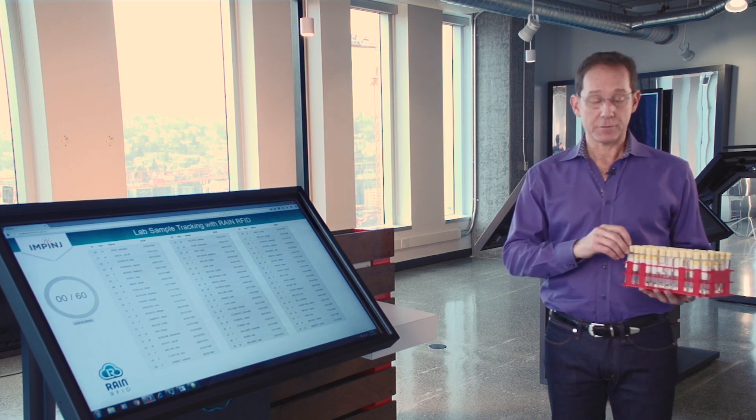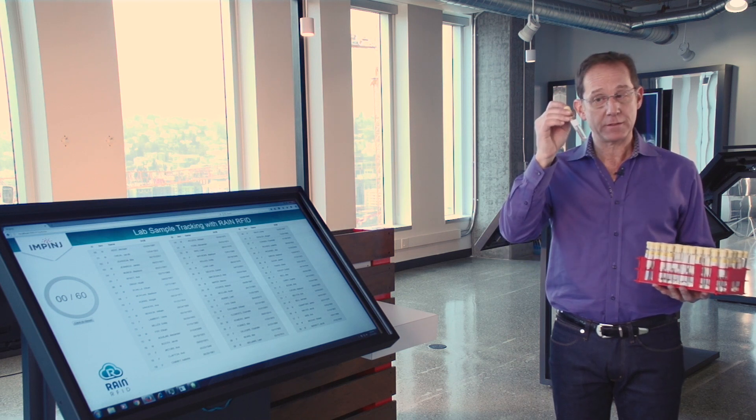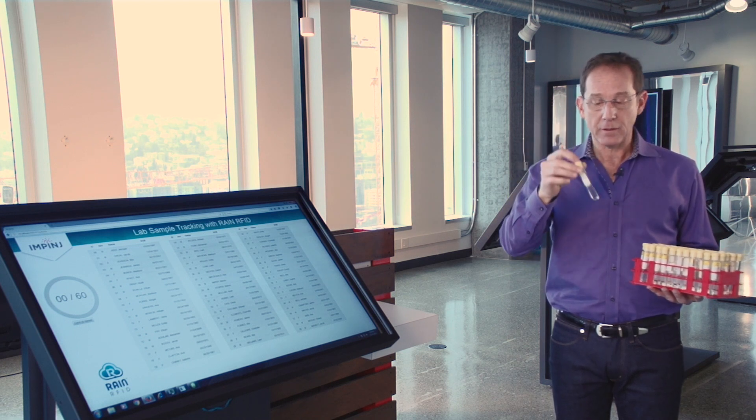Our RAIN RFID can solve some of those problems. So what we're showing here is a very small RAIN RFID tag powered by an Impinj Monza IC on that little sticker right there.